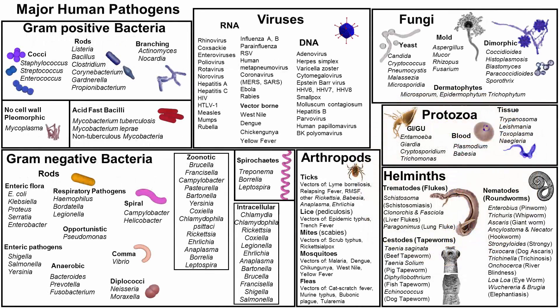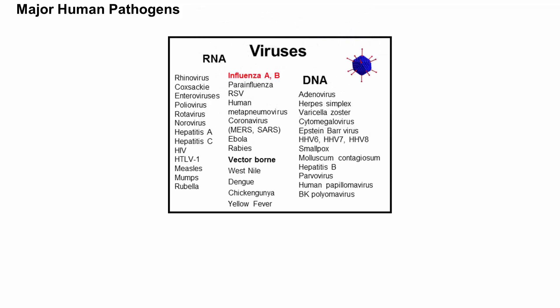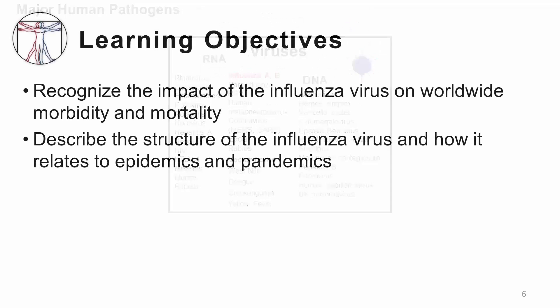If we return to our major human pathogens map, we are in the viruses section. Under the viruses section, we are in the RNA viruses subdivision and we will be specifically discussing influenza today. By the end of this session, you should be able to recognize the impact of the influenza virus on worldwide morbidity and mortality and describe the structure of the influenza virus and how it relates to epidemics and pandemics.